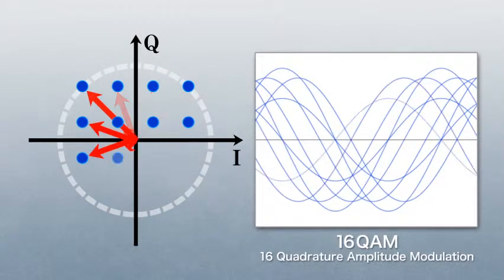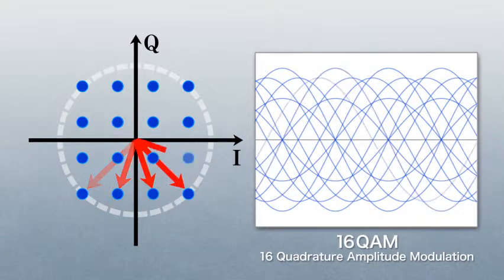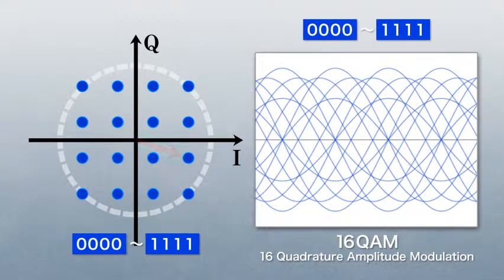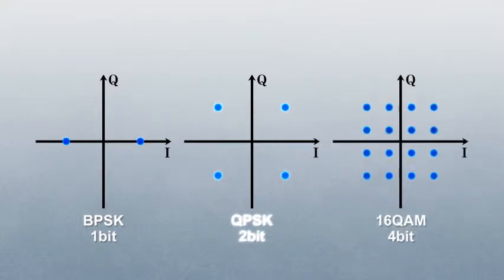The 16QAM controls both phase and amplitude, enabling transmission of four times the amount of information compared with BPSK. More information can be transmitted by using more phases and amplitudes in one optical signal. Here, however, a problem arises.